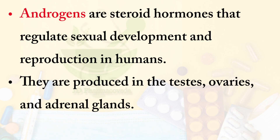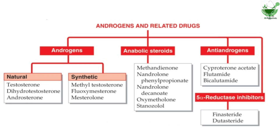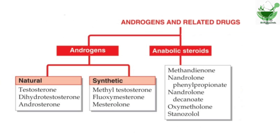Now let's discuss the androgens and other hormones. Androgens are steroid hormones that regulate sexual development and reproduction in humans. They are produced in the testis, ovaries, and adrenal glands. The natural androgens are testosterone, dihydrotestosterone, and androsterone. The synthetic androgens include methyltestosterone, fluoxymesterone, and mesterolone.